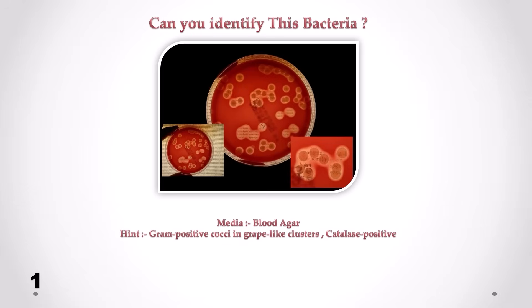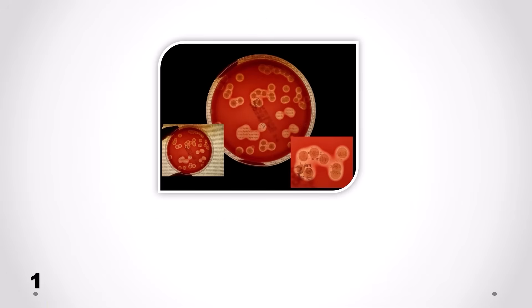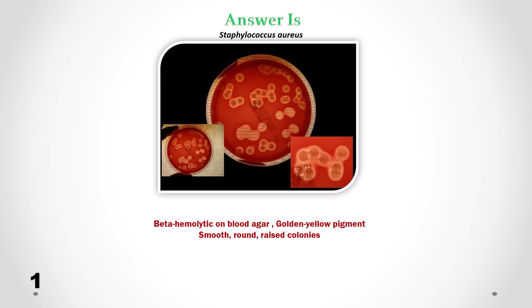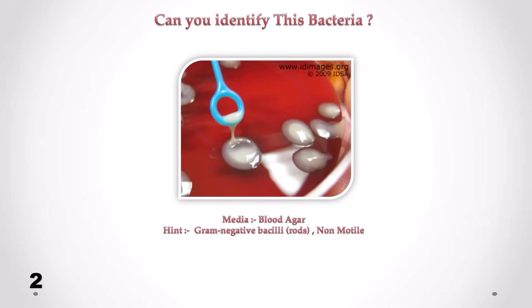Can you identify this bacteria? Correct answer is Staphylococcus aureus. We can see beta-hemolytic on blood agar, golden yellow pigment, smooth round and raised colonies.